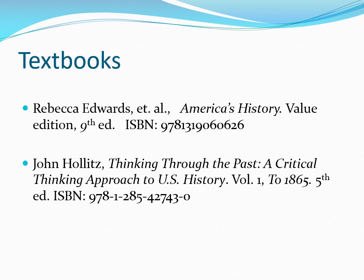The textbooks are listed here. The main thing you need right away is Hollitz's book, Thinking Through the Past: A Critical Thinking Approach to U.S. History. When ordering books online, the ISBN number is very important because it is unique to that book — there's virtually no chance you'll get the wrong book. The Rebecca Edwards book — I have a few old copies, including some where Edwards is not listed as the main author, which would probably be good enough. I'll give them to anyone who shows up, first come first served.